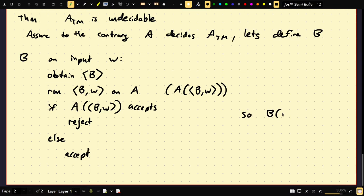So consider B on input W. B on input W is going to pass it to ATM and if ATM accepts B is actually going to reject. So that means A was not correct if B accepts W. Now on B on input W suppose that B rejects W, then ATM says it would reject but then B accepts. So again we have another proof that ATM is undecidable.